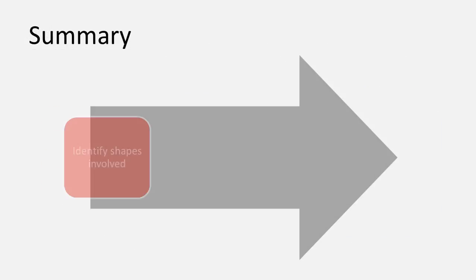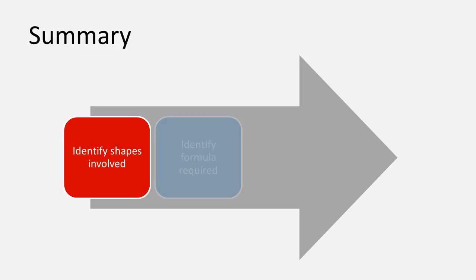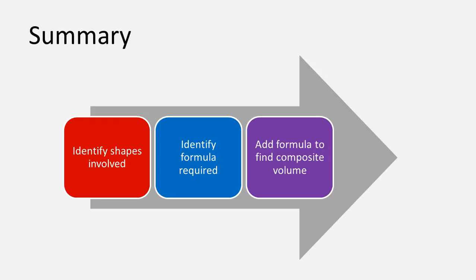In summary, to find the volume of a composite shape using addition, we need to identify the shapes involved, identify the formula required, add the formulas to find the composite volume, and then clearly indicate your final answer with appropriate units.